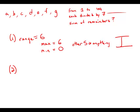Statement 2 tells us that the 7 numbers are consecutive integers. Now we have a lot of information. Whenever you find out that a set is a set of consecutive numbers, that really ups the amount of information you have. With 7 consecutive integers, we know for a fact that one of them will be divisible by 7. Let's say c is divisible by 7, so it has a remainder of 0.